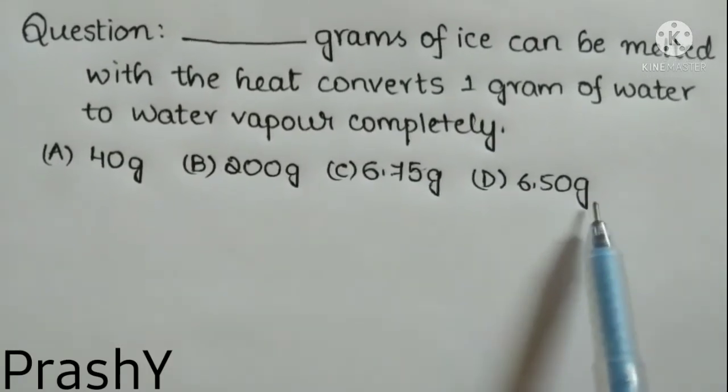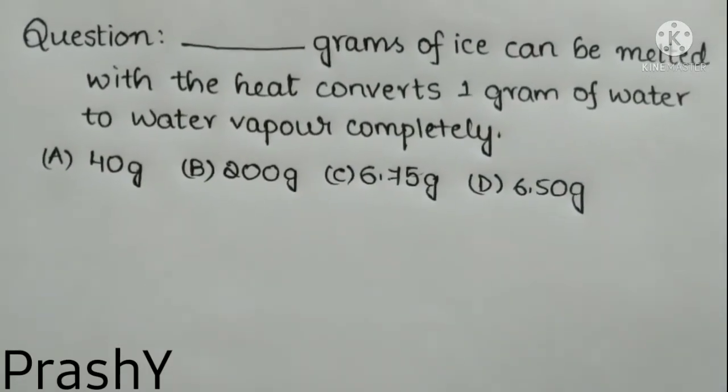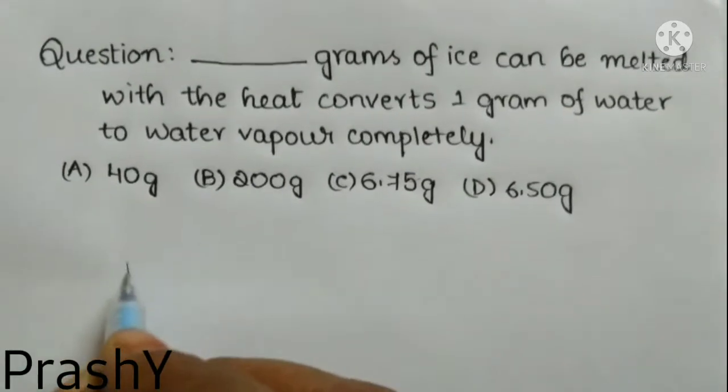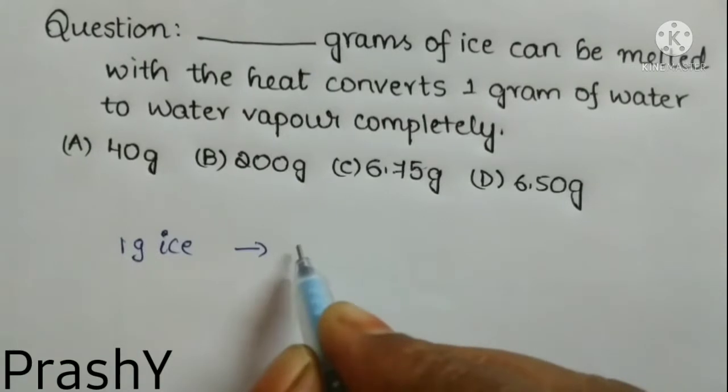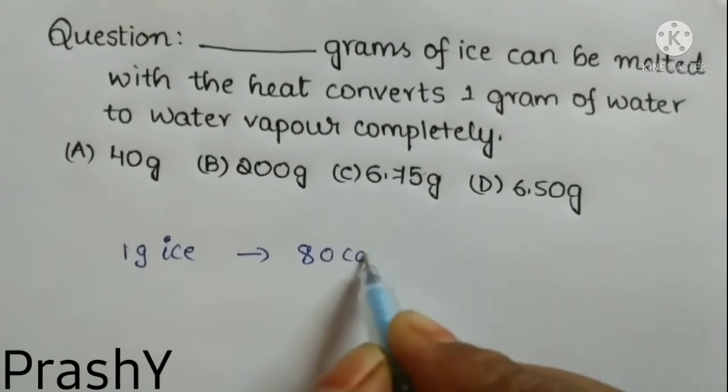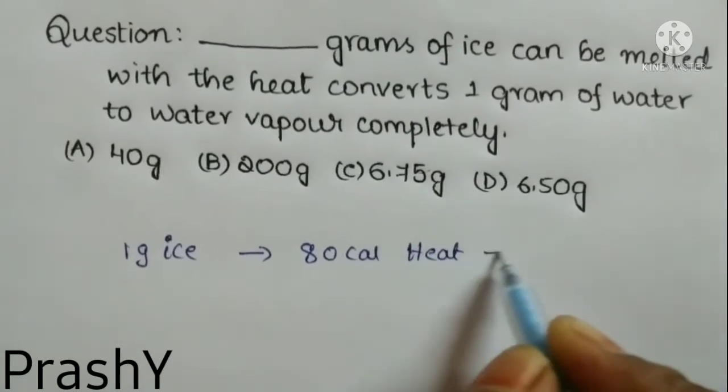And Option D: 6.50 grams. So let us move to the solution. We all know that 1 gram of ice requires 80 calories of heat to melt completely.